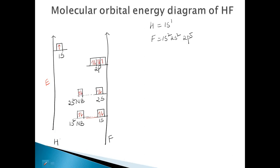When we come to the 2P orbital, it splits into PX, PY, and PZ. The PZ orbital has the same symmetry as the 1S orbital of hydrogen — its lobes are oriented along the internuclear axis. Because of this same symmetry, the linear combination of the 1S orbital of hydrogen and the 2PZ orbital of fluorine will combine, resulting in the formation of sigma molecular orbitals.